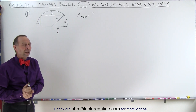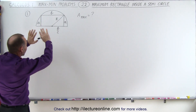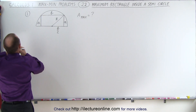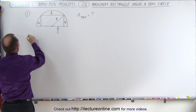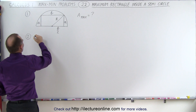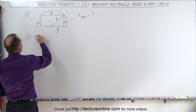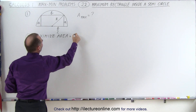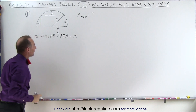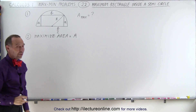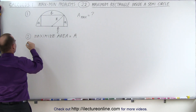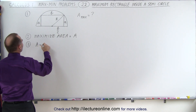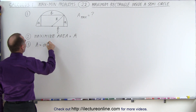How do we do that? Well, after we draw the diagram, step one, we need to determine what's being maximized. In this case, we're trying to maximize the area — let's call it A. Now we need an equation for that area. And since it's a rectangle, the area is equal to A times B.